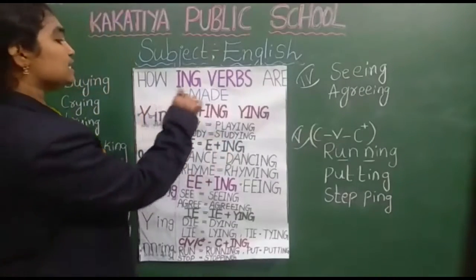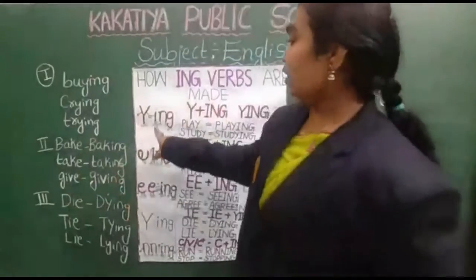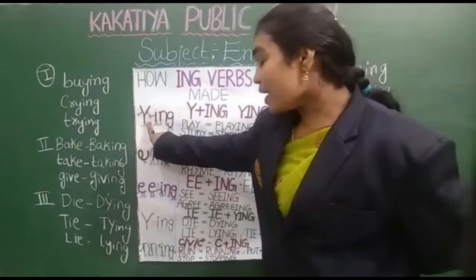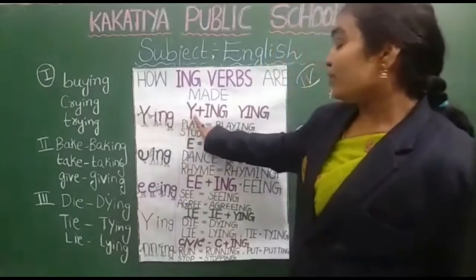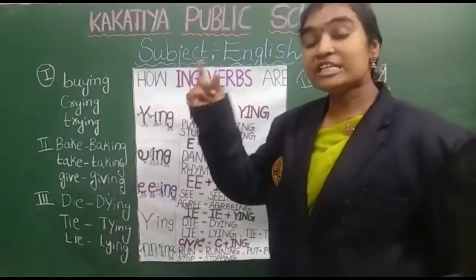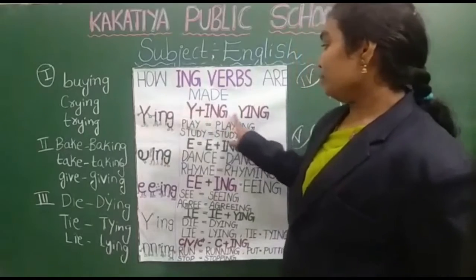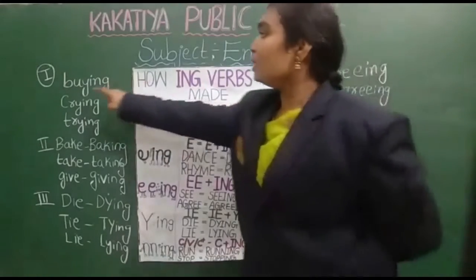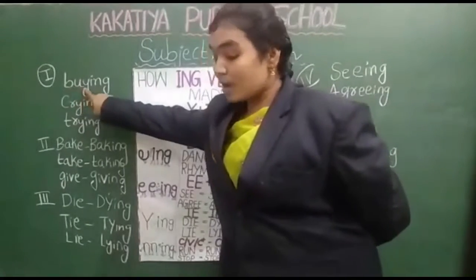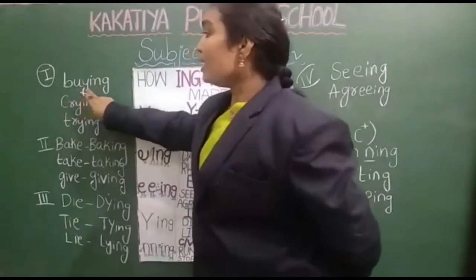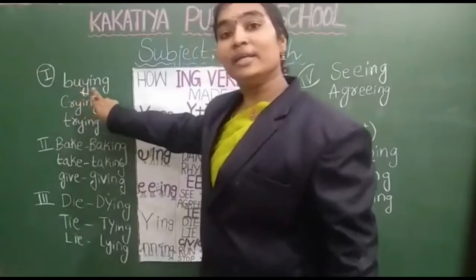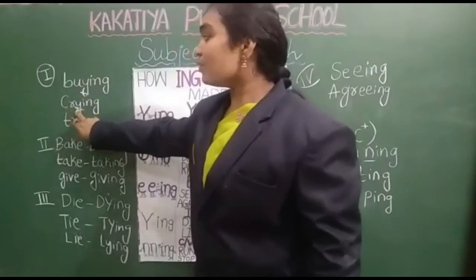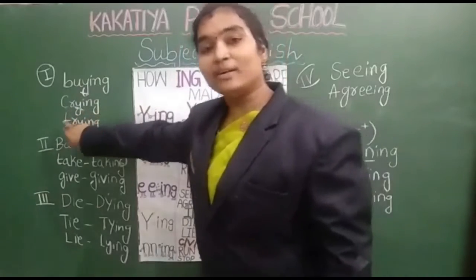Rule number 1. When the word ends with the suffix Y, it becomes friends with ING. So when the word ends with Y, it becomes Y-I-N-G. For example, look here: B-U-Y, so B-U-Y plus I-N-G — buying. C-R-Y — it ends with Y — C-R-Y plus I-N-G — crying.